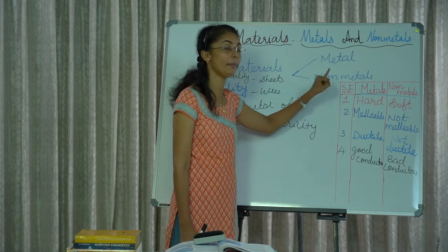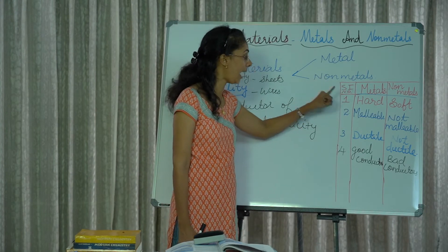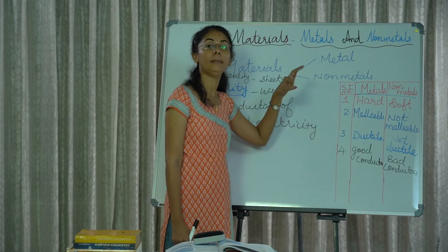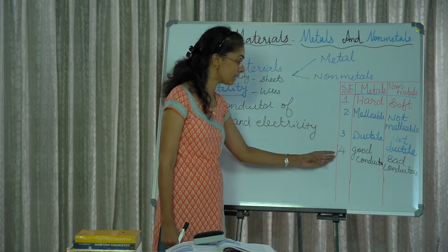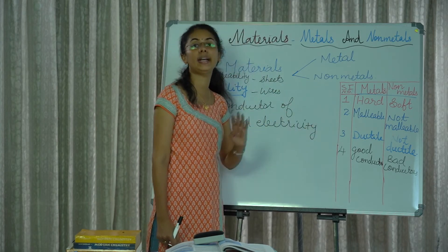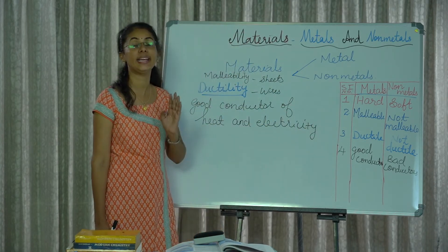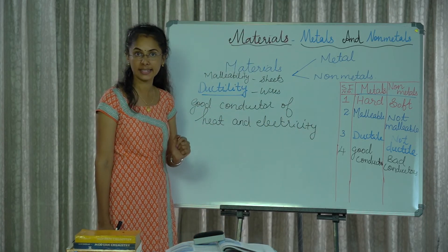To recap: the first property is metals are hard; second, metals are malleable; third, metals are ductile; and fourth, metals are good conductors of heat and electricity.